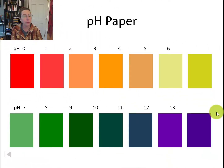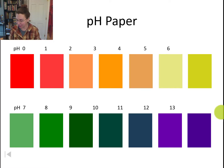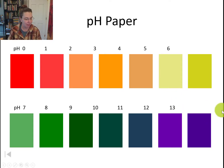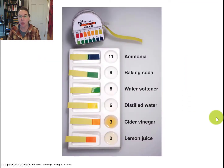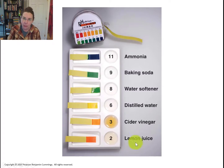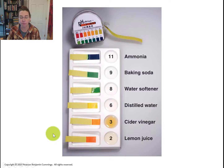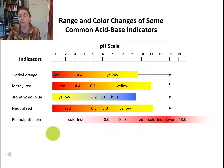pH paper gives a much more accurate view of what the pH is, but still not as precise as a pH meter. Let's talk about some different pHs of common substances. Ammonia comes out very basic at a pH of 11 — you can see it's blue — and as we trend down toward things that are more acidic like lemon juice, we move into the red range.